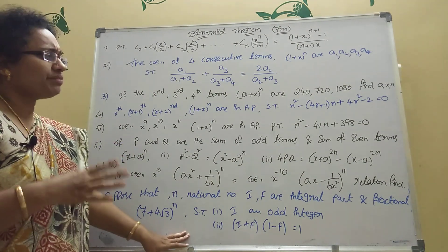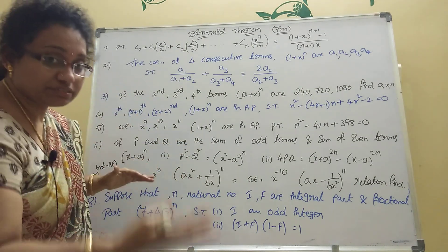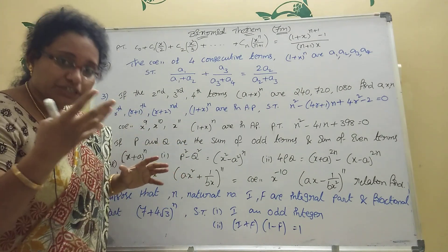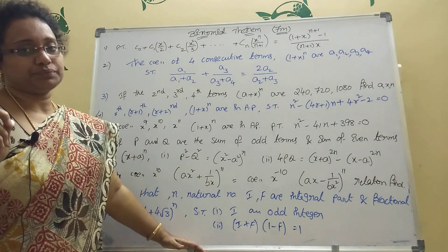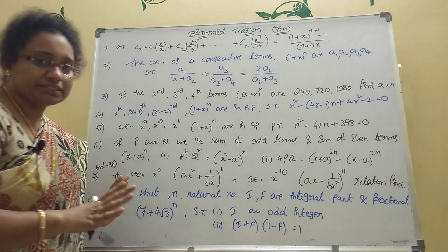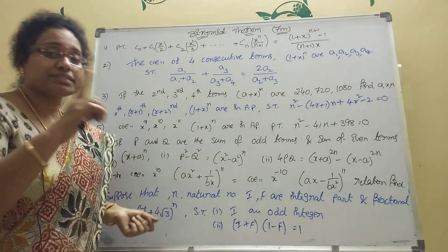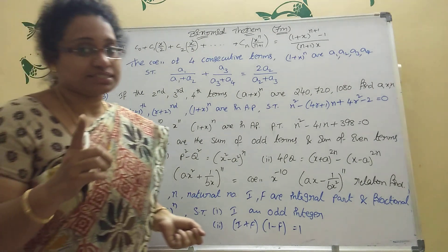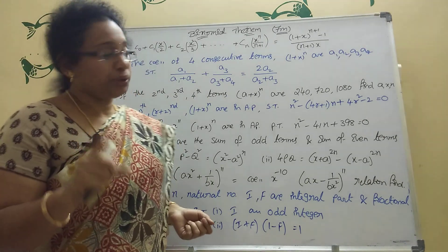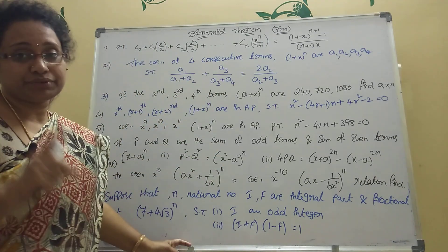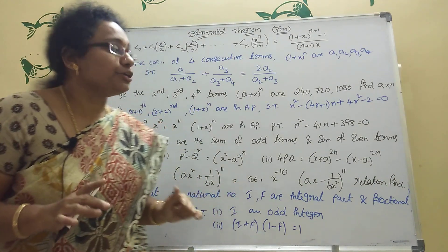The second part is: (i + f)(1 − f) = 1. Practice both parts of this model well — they often come together. Sometimes the question is given differently, so practice these sums; one is guaranteed to come. This model is there for both Telangana and Andhra Pradesh students. For seven marks: one sum from some-of-the-series (five problems) and one sum from these eight problems — both are guaranteed.